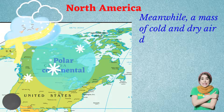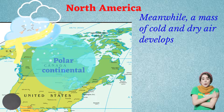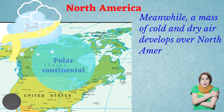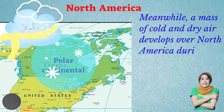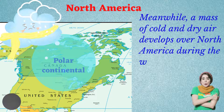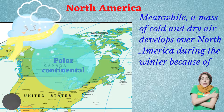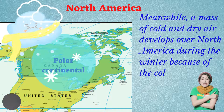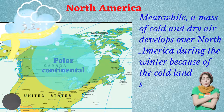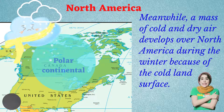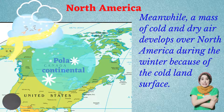Over the Caribbean, a warm and moist air mass develops. During the Northern Hemisphere's winter season, a cold and dry air mass develops over the northern part of North America.